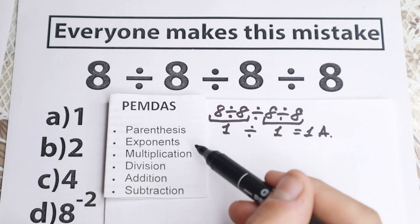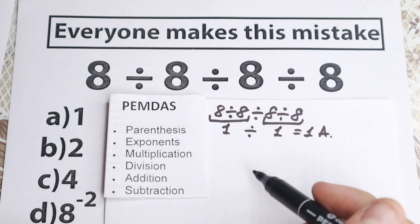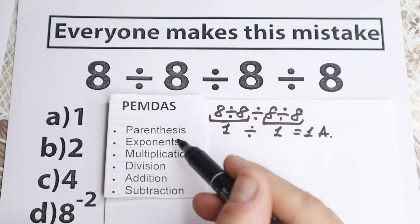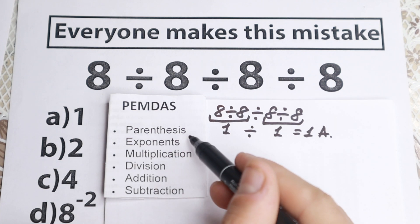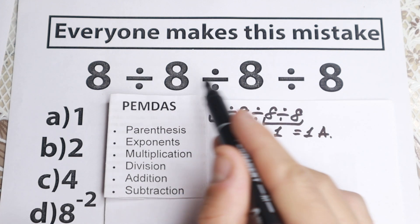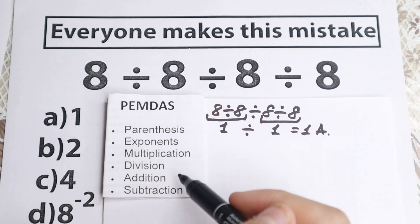So we have PEMDAS order, parentheses, then exponent, then multiplication, division as one group, and the addition and subtraction as one group. So first of all, let's solve this correctly with this PEMDAS order. First of all, we have parentheses in this order, but right here, do we have parentheses? I don't see any parentheses, we don't have parentheses, we skip this step, we go to the next step.